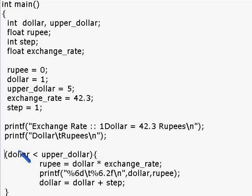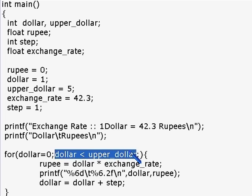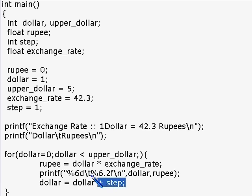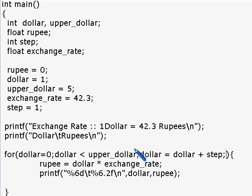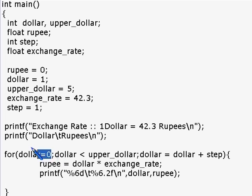Let's replace it with a for loop and explain how it works. A for loop has three parts. The first part is called initialization — for example, I'm going to initialize dollar equal to zero. This is executed only the first time the for loop is entered. Then it has the condition, which is executed every time the for loop is entered, exactly the same way as the condition in a while loop. And it has an increment part. So we have initialization, condition, and increment — and everything else is the same.